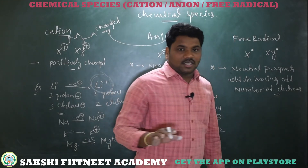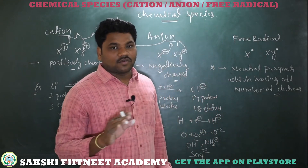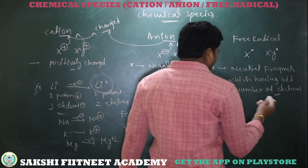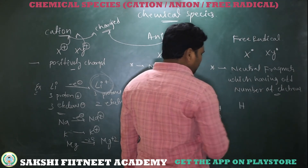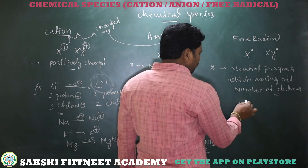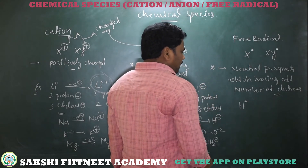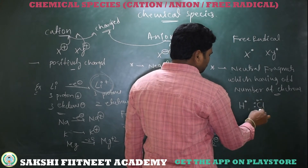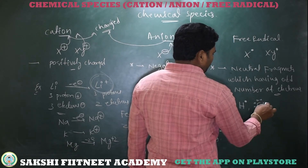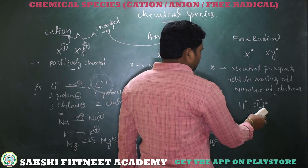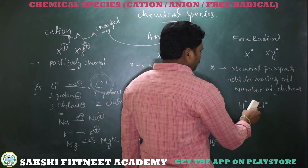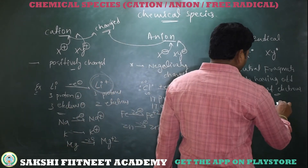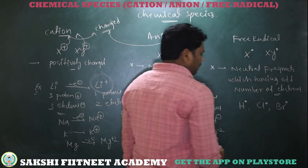Now coming to free radical. Free radical means no oxidation, no reduction — no loss of electron, no gain of electron. They simply have their own electrons which are odd in number. For example, hydrogen has only one electron, so it is a radical. Chlorine has three lone pairs and one unpaired electron, so we write Cl radical. Similarly we have Br radical — bromine radical.